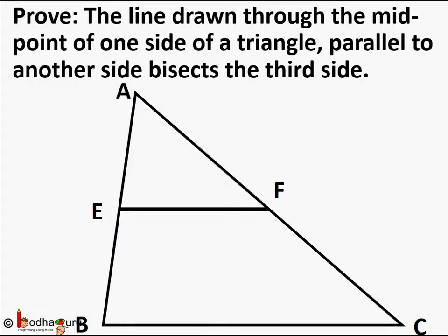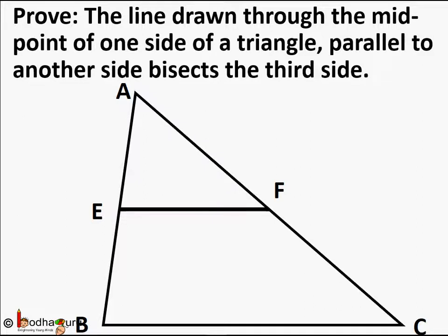The converse of this theorem would be: the line drawn through the midpoint of one side of a triangle, parallel to another side, bisects the third side. This means in this case we assume that E is the midpoint of AB, and we draw a line parallel to BC from E that intersects AC at point F, and we need to prove that F is the midpoint of AC.